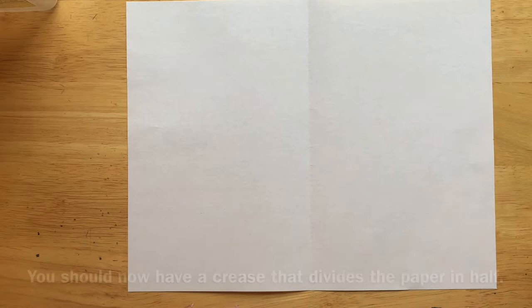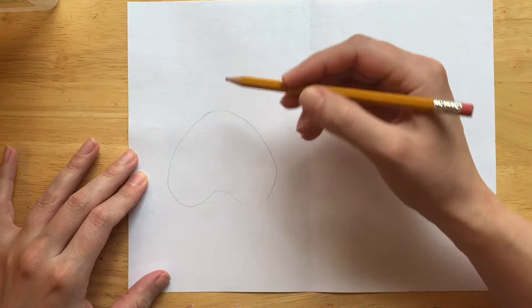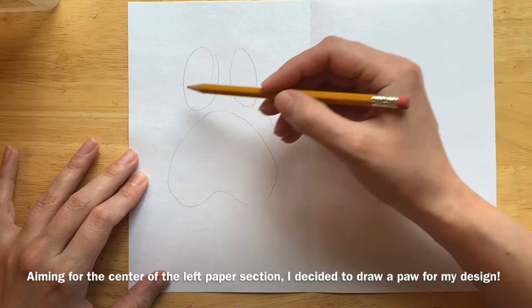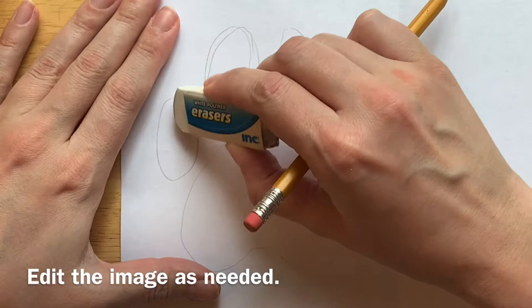With your paper now evenly divided in half, using a pencil, draw your selected subject. Notice how I'm placing it on the left side of my paper. Keep your pencil lines light, that way if you make any mistakes you can go in and erase easily.